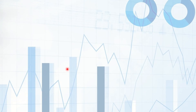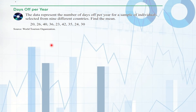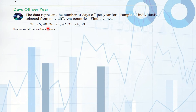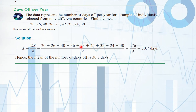Let's do an example. We have data for number of days per year for a sample of individuals selected from 9 different countries. Since it's a sample, we use x-bar, and n equals 9. Adding all numbers together and dividing by 9 gives a mean of 30.7 days. We may consider 31 days as the mean number of days.